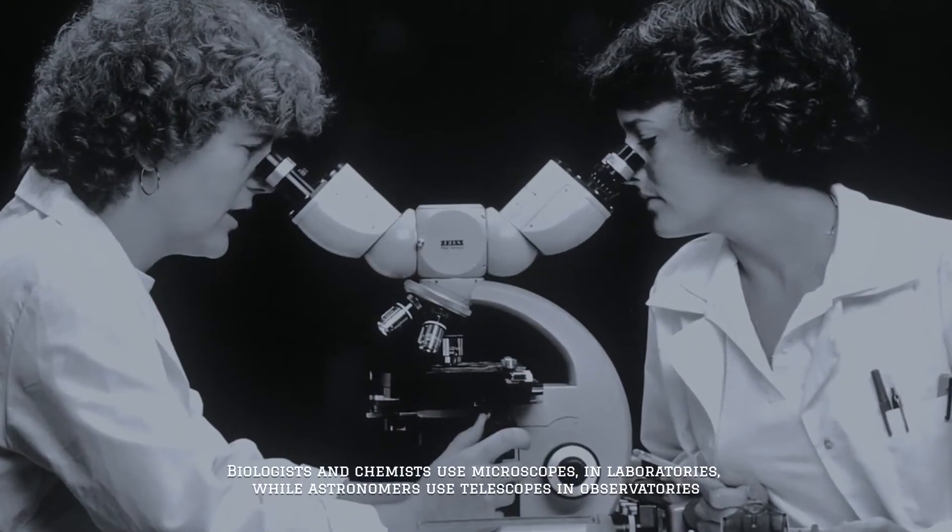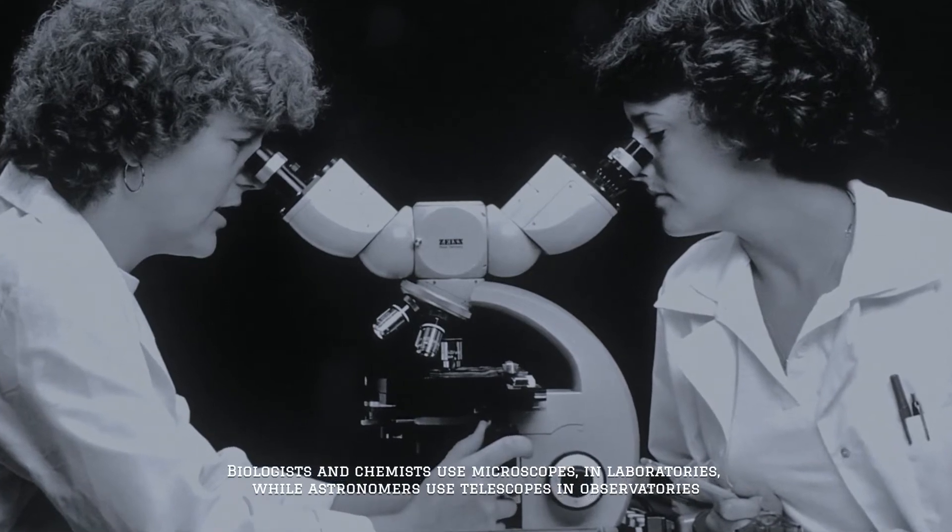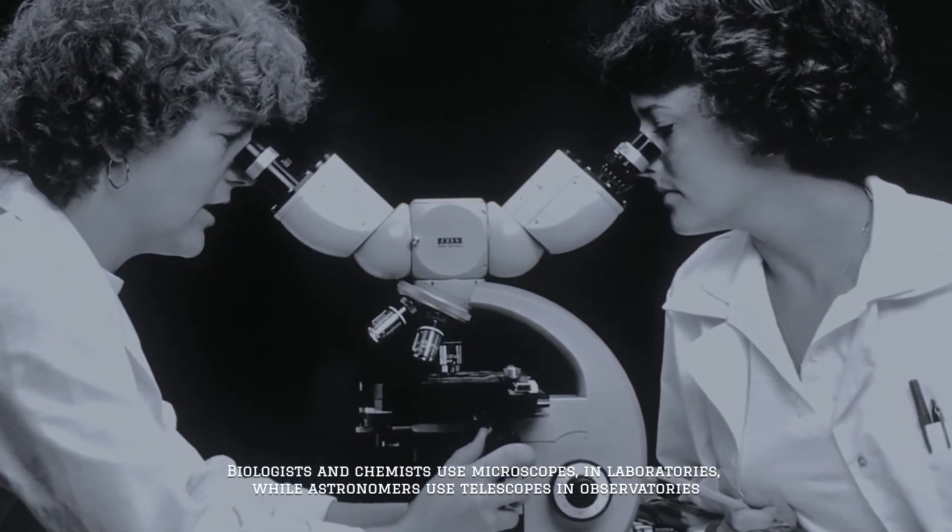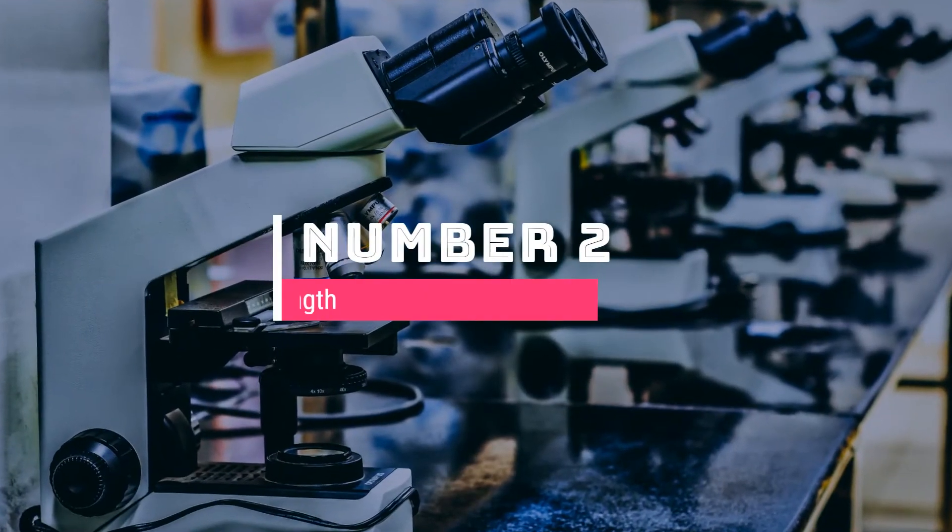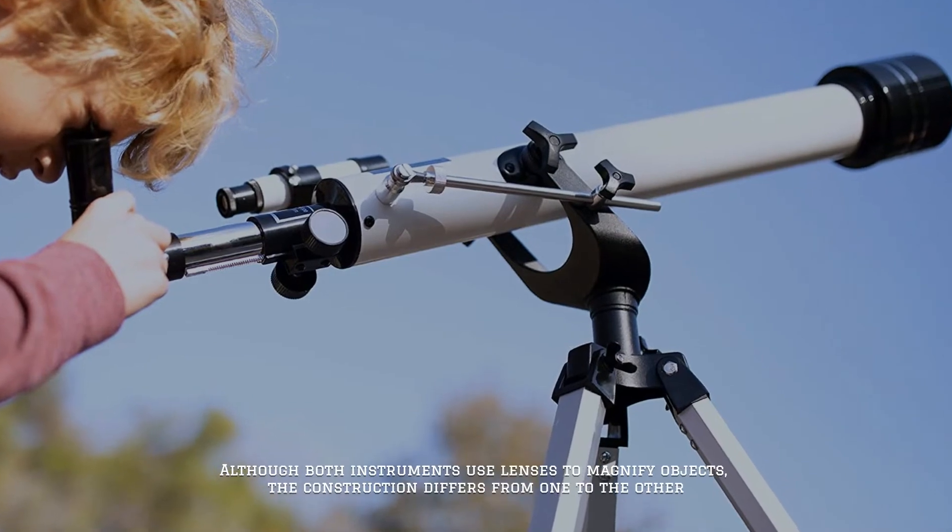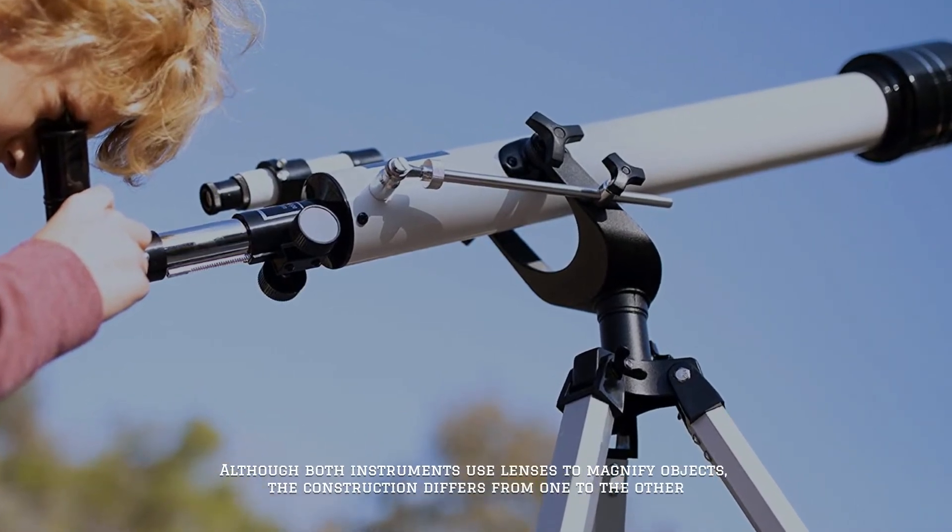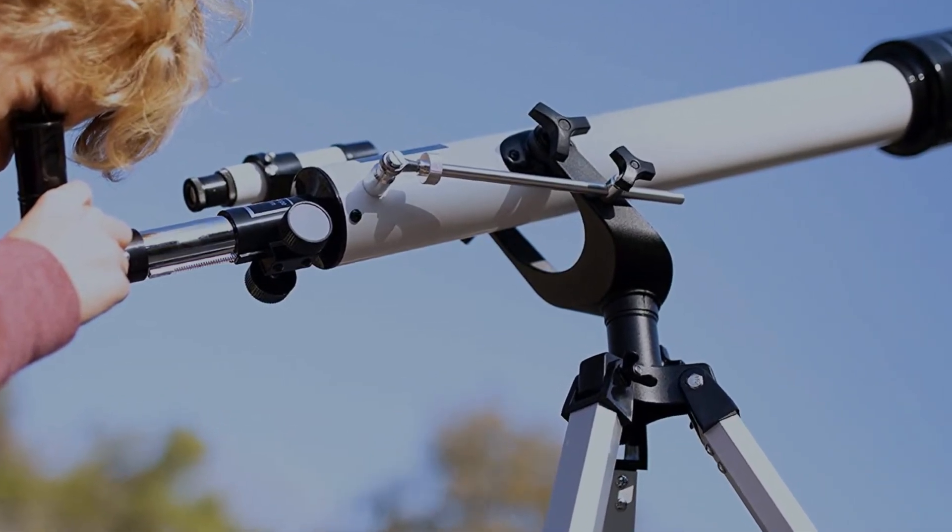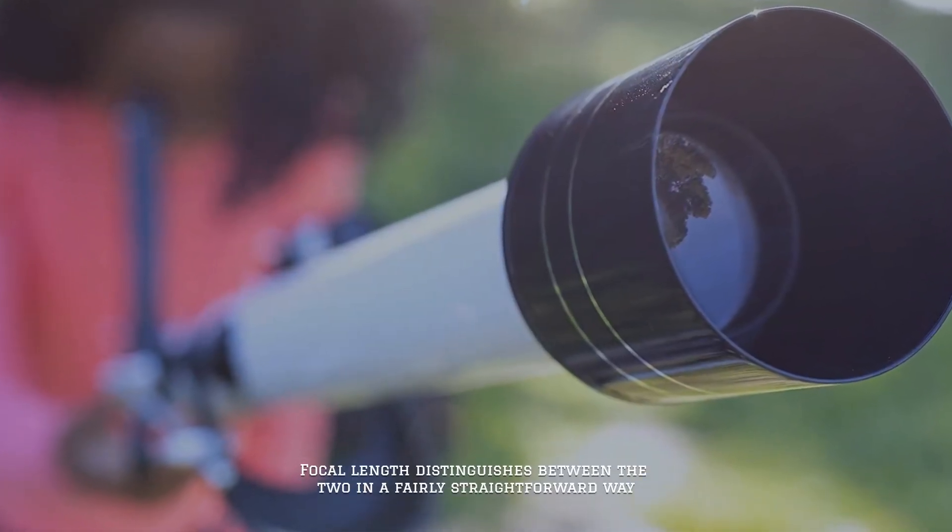Biologists and chemists use microscopes ordinarily in laboratories while astronomers use telescopes in observatories. Number two: focal length. Although both instruments use lenses to magnify objects, the construction differs from one to the other. Focal length distinguishes between the two in a fairly straightforward way.